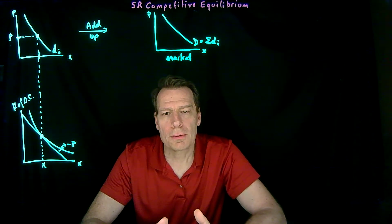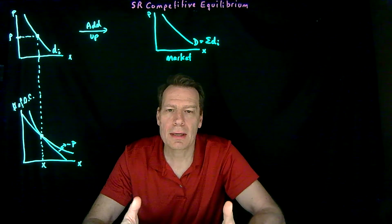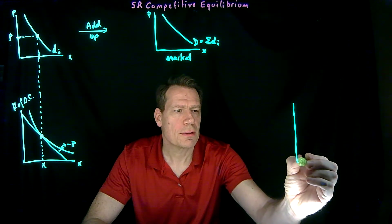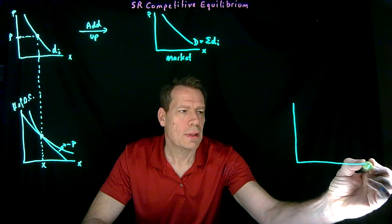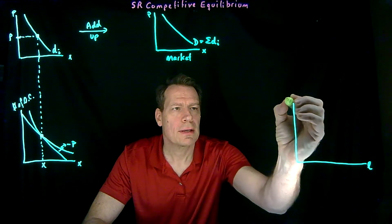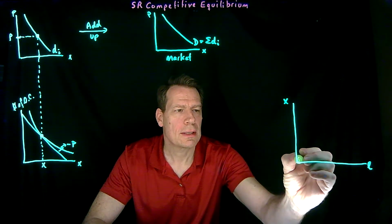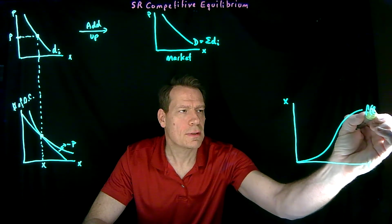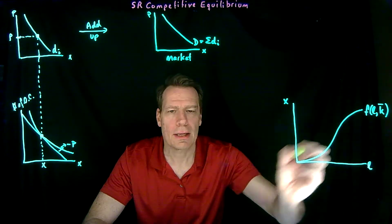We then moved on to firms. And we said that in the short run, firms operate on a slice of their production function, where labor is the thing that can vary to produce output, and that slice might look something like this. So this is the production function that holds capital fixed at its current level.